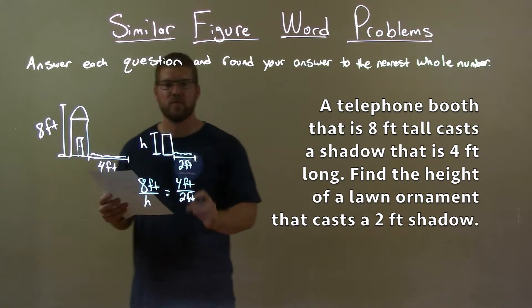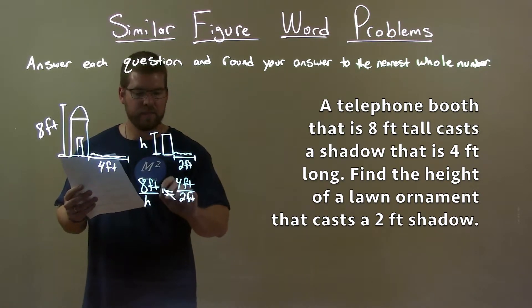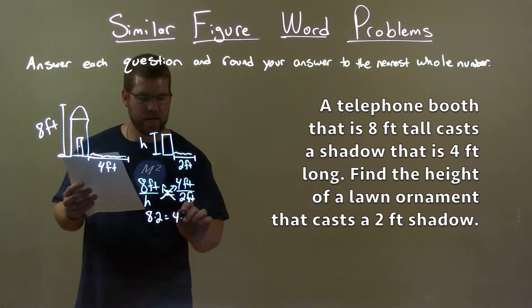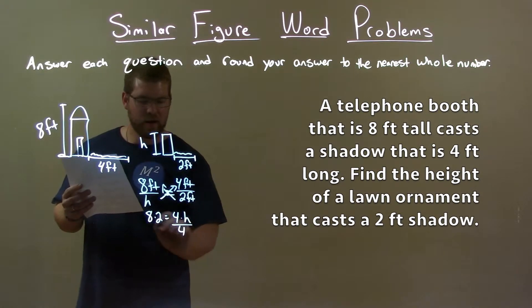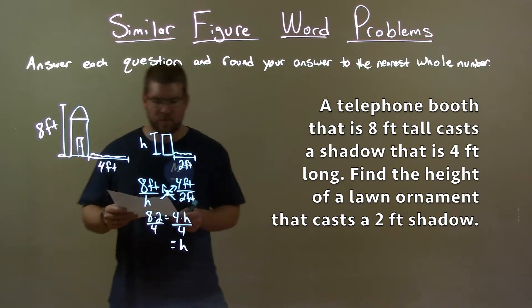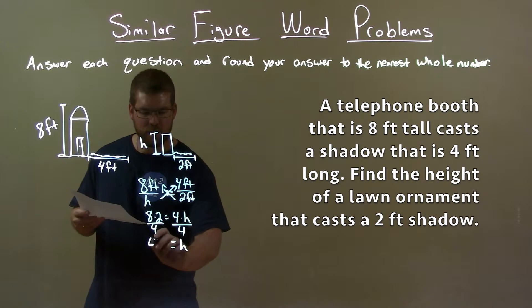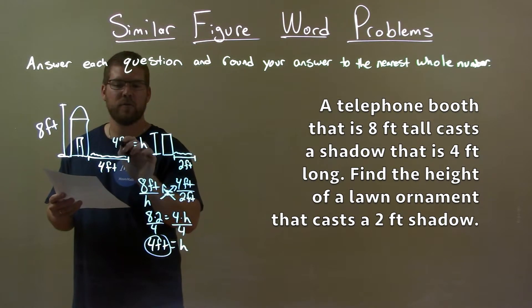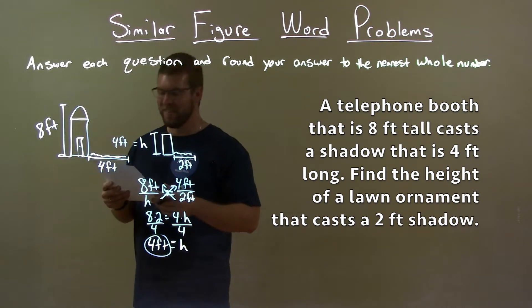And now we'll solve for that h. We cross multiply here. 8 times 2 equals 4 times h. We divide both sides by 4. This gives us h by itself. And 8 times 2 divided by 4 is 4 feet. And so my final answer here is just 4 feet for the height of the lawn ornament.